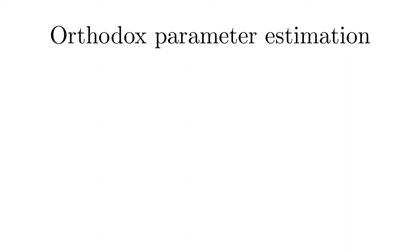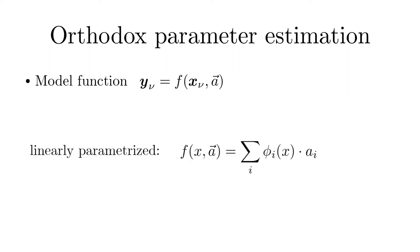Now we come to parameter estimation. We recapitulate the classical regression procedure before we introduce the probabilistic approach. We assume we have a suitable model which is for instance given by physical laws. A very prominent choice are linear models in which one uses a linear combination of suitable ansatz functions phi sub i of x with the coefficients being the parameters.